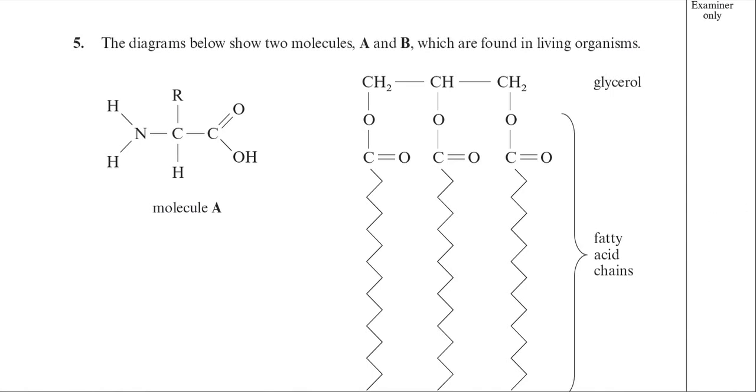This is question number five now from the June 2011 BY-1 paper. It's a question on biological molecules, and you've got a diagram there of two molecules, which the examiner has called molecule A and B, and he's just told you they're found in living organisms.